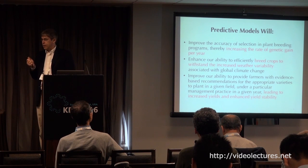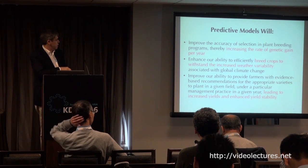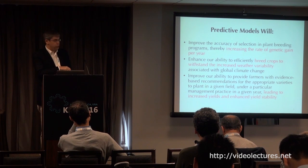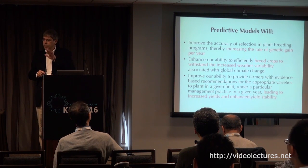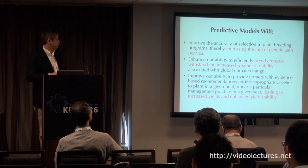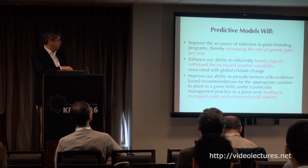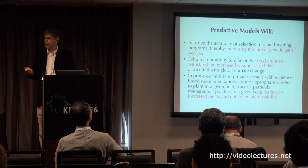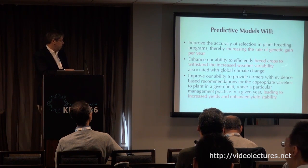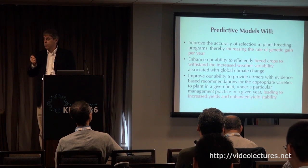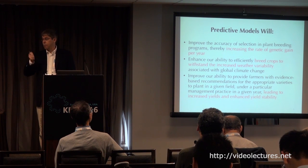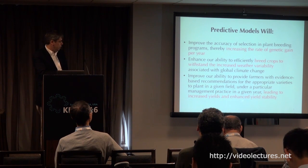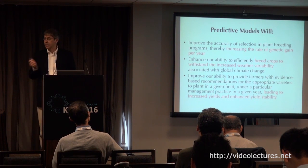If we are successful as a community at doing this, we will be able to increase the rate of genetic gain per year, helping keep that yield curve moving in the right direction. We should be able to breed crops to withstand increasing weather variability, and provide farmers with evidence-based recommendations of what to grow, when, and how to manage those crops — leading to both increased yields and, probably much more importantly, enhanced yield stability.